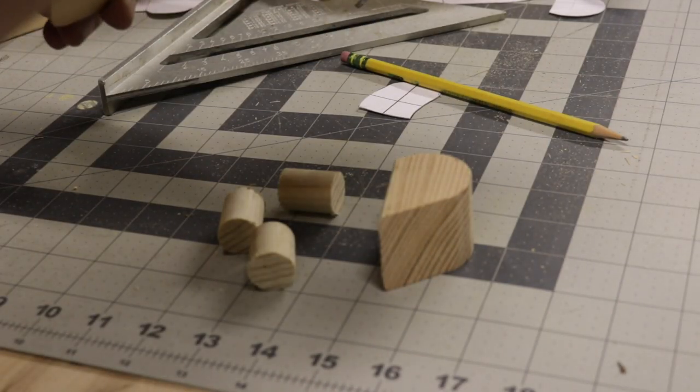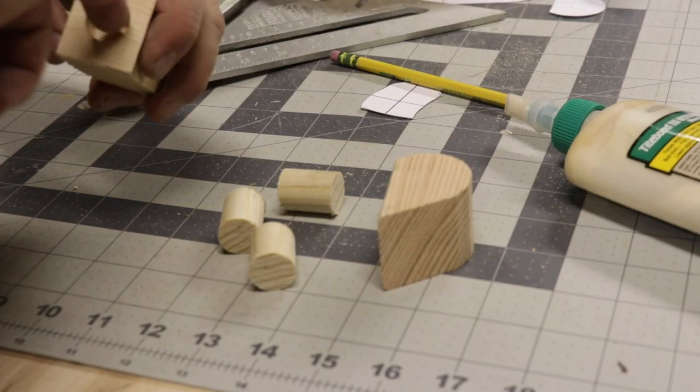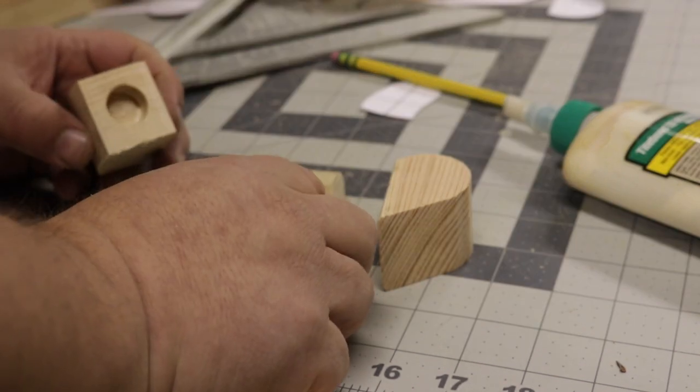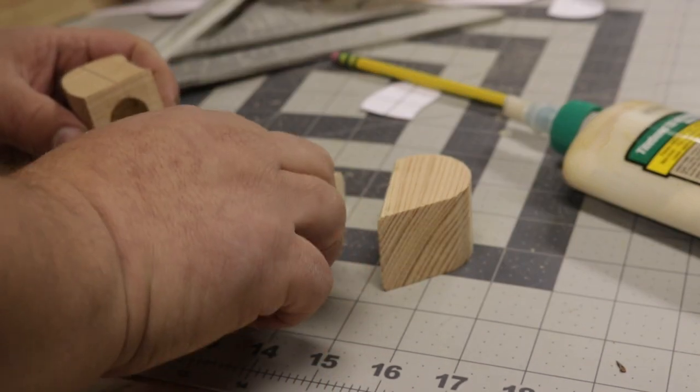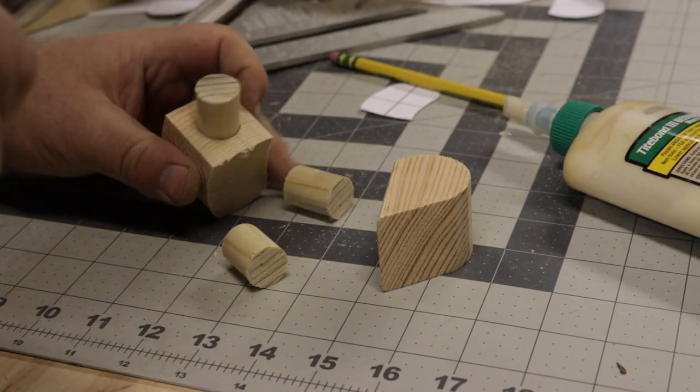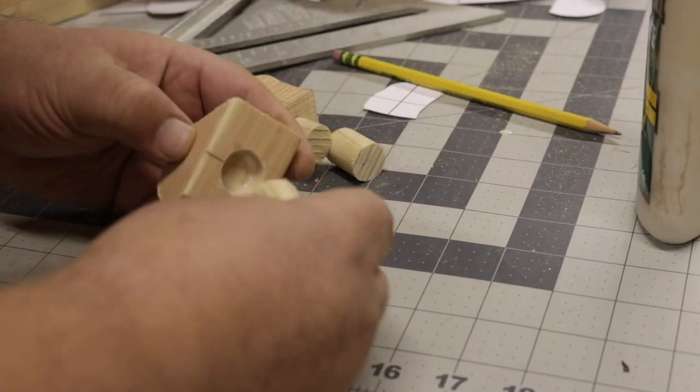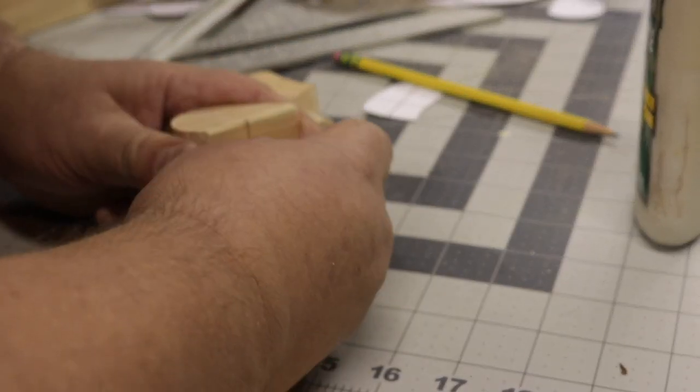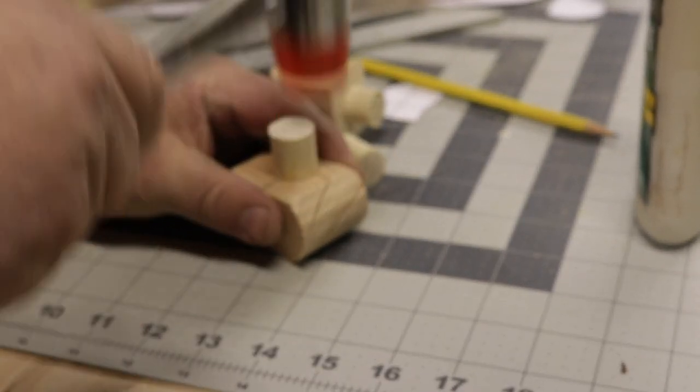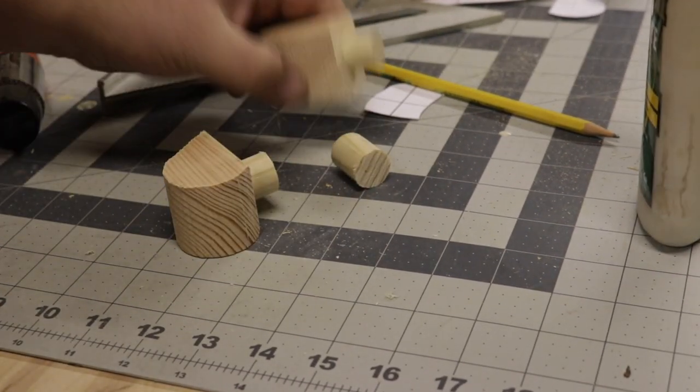Gluing these in is simple. Just put a little bit of glue in the hole that you had drilled earlier. Spread it around. Grab one of your pieces and just work that in. It may need a little persuasion. We'll let those dry.